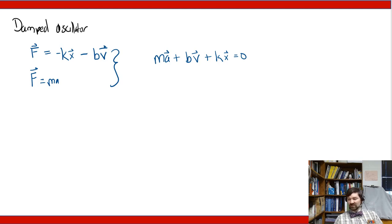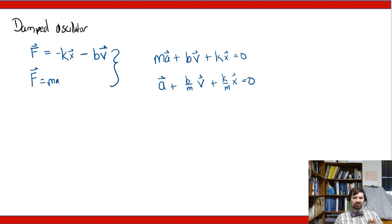Sometimes we divide some terms to get it into the normalized form: a plus b over m times v plus k over m times x is equal to zero. This is going to give us our basic damped harmonic oscillator.